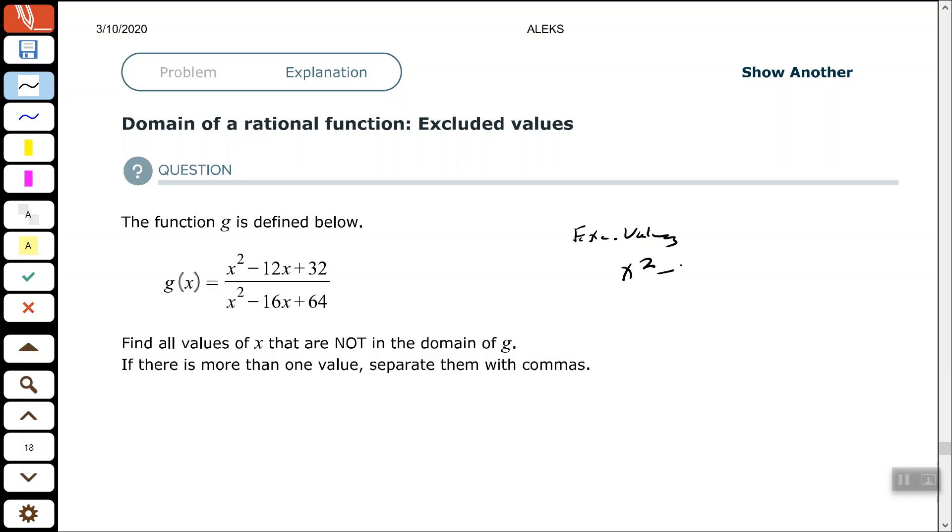So X squared minus 16X plus 64 equals zero. Factor this. Factors of, this is a perfect square trinomial looks like here, because we have perfect square X squared. Perfect square is 64 with a minus.